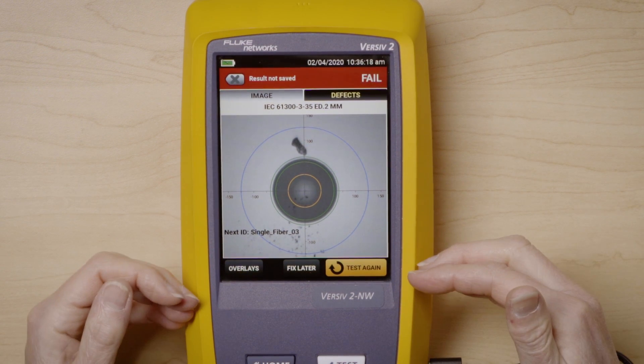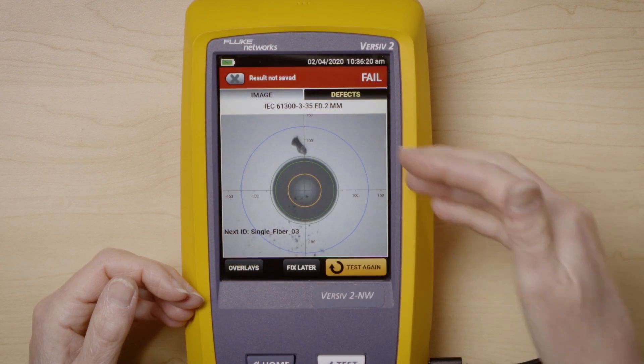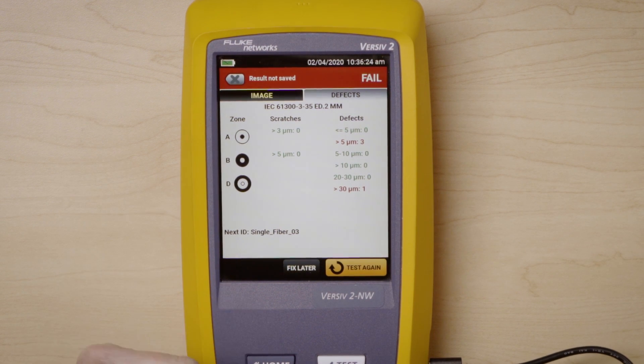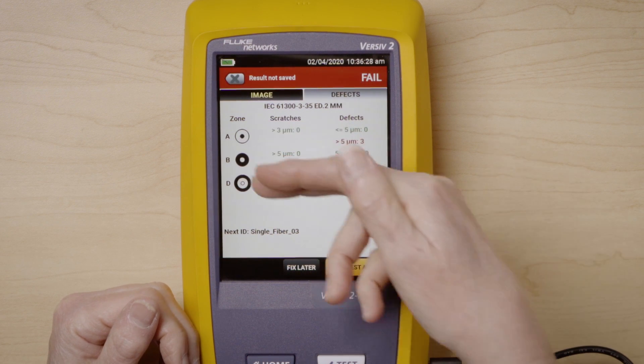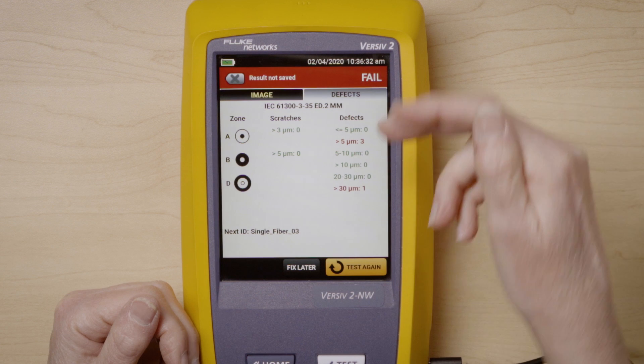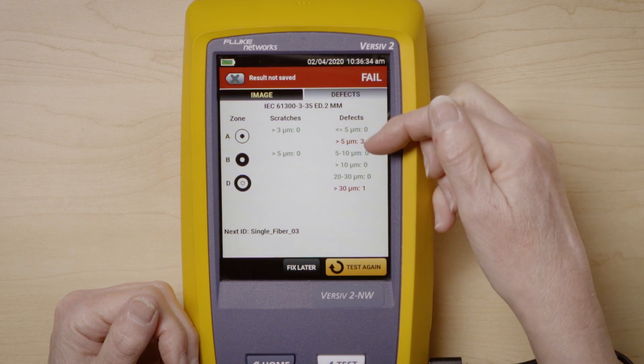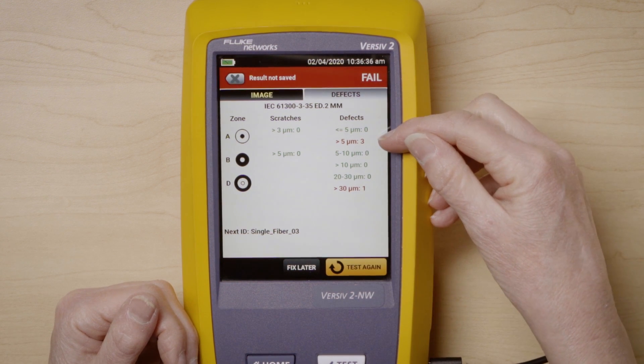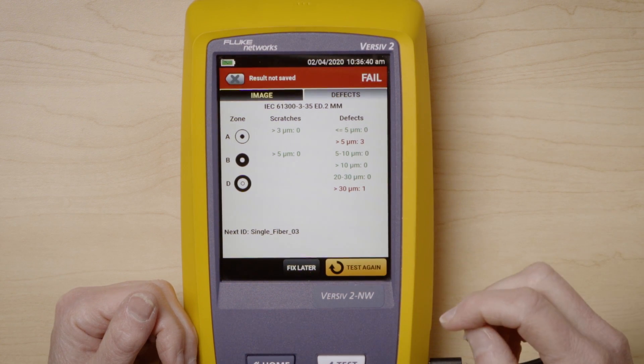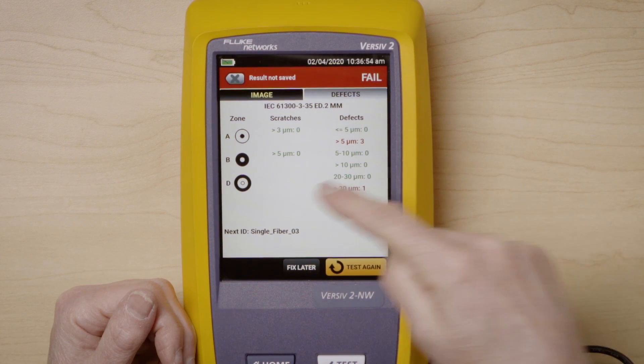The other thing the Fi3000 gives you is the image or you can look at it from a defect point of view using the different zones as defined by the standard. So in this case, there's three zones. There's limits for both the scratches and defects. And you can see here that I am failing in zone A on defects because I have more than three that are five microns large.